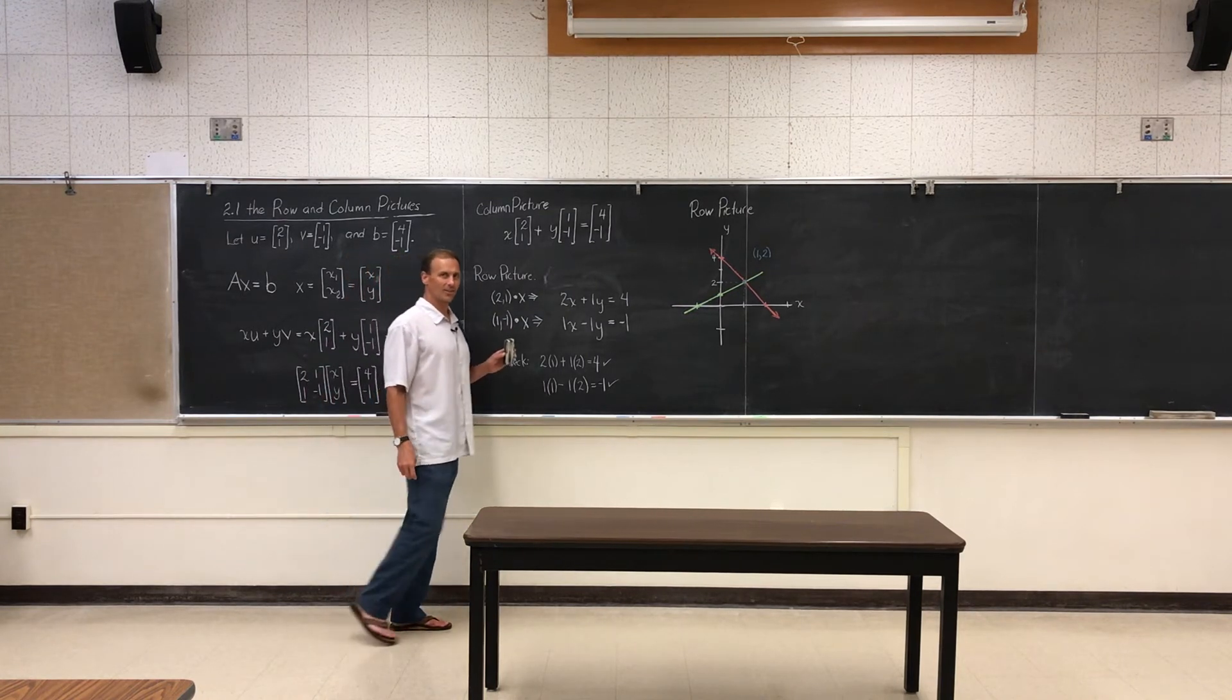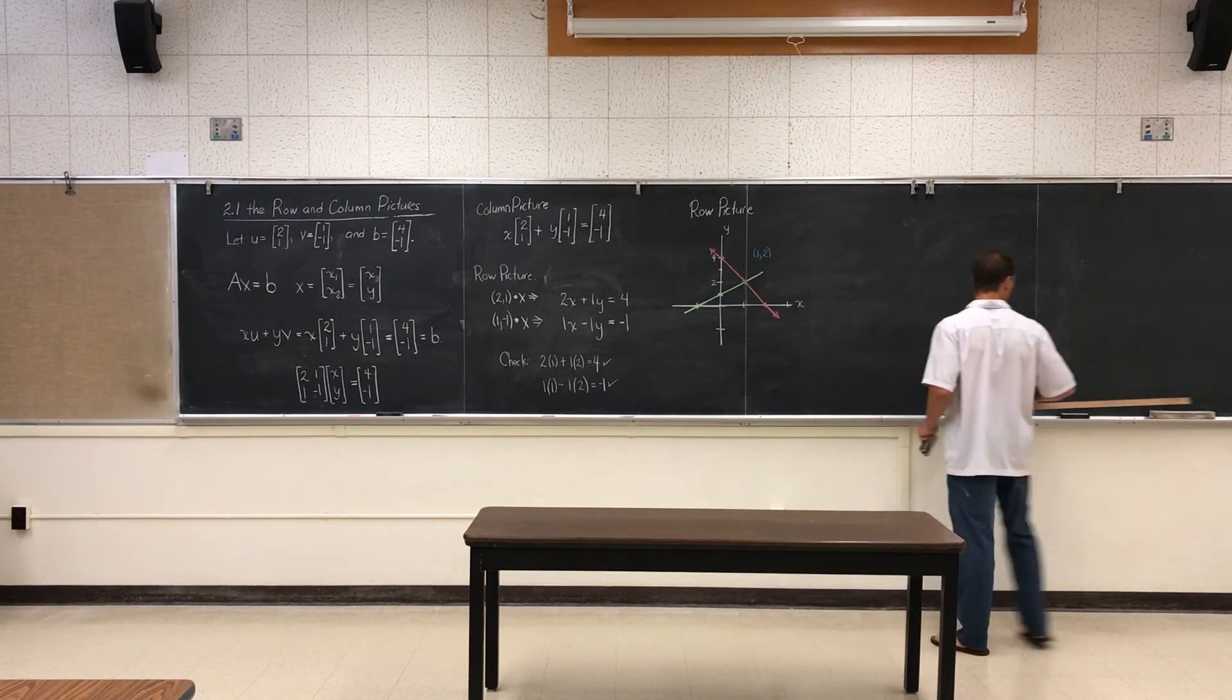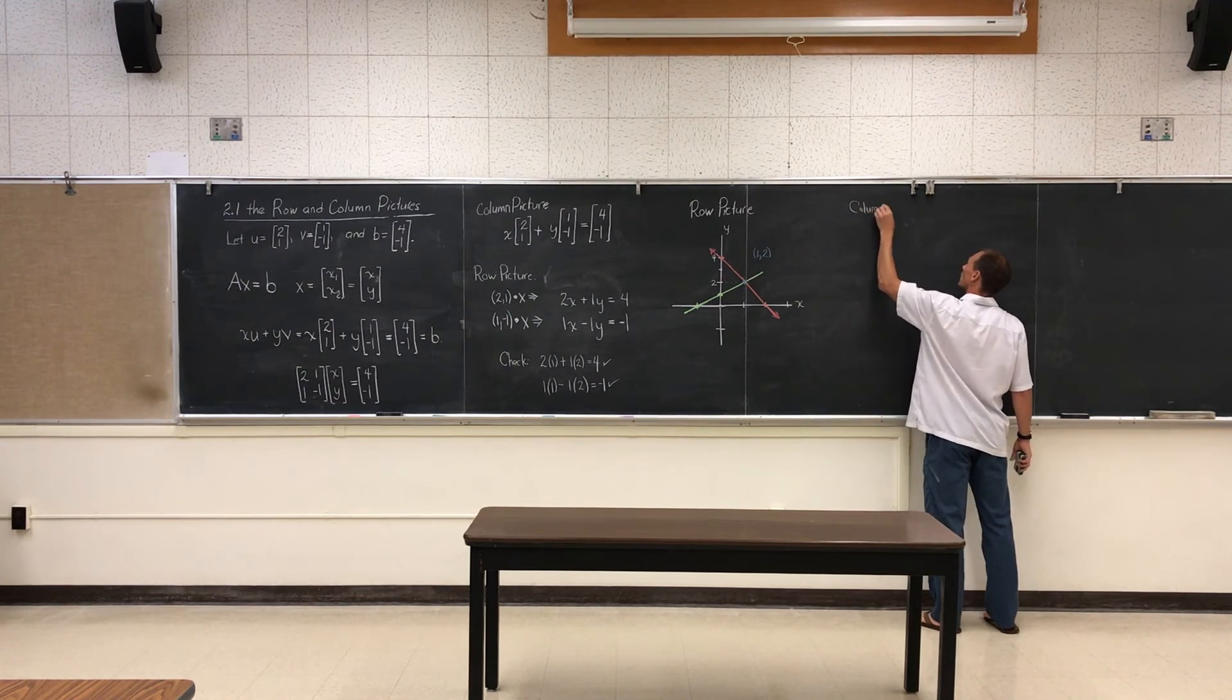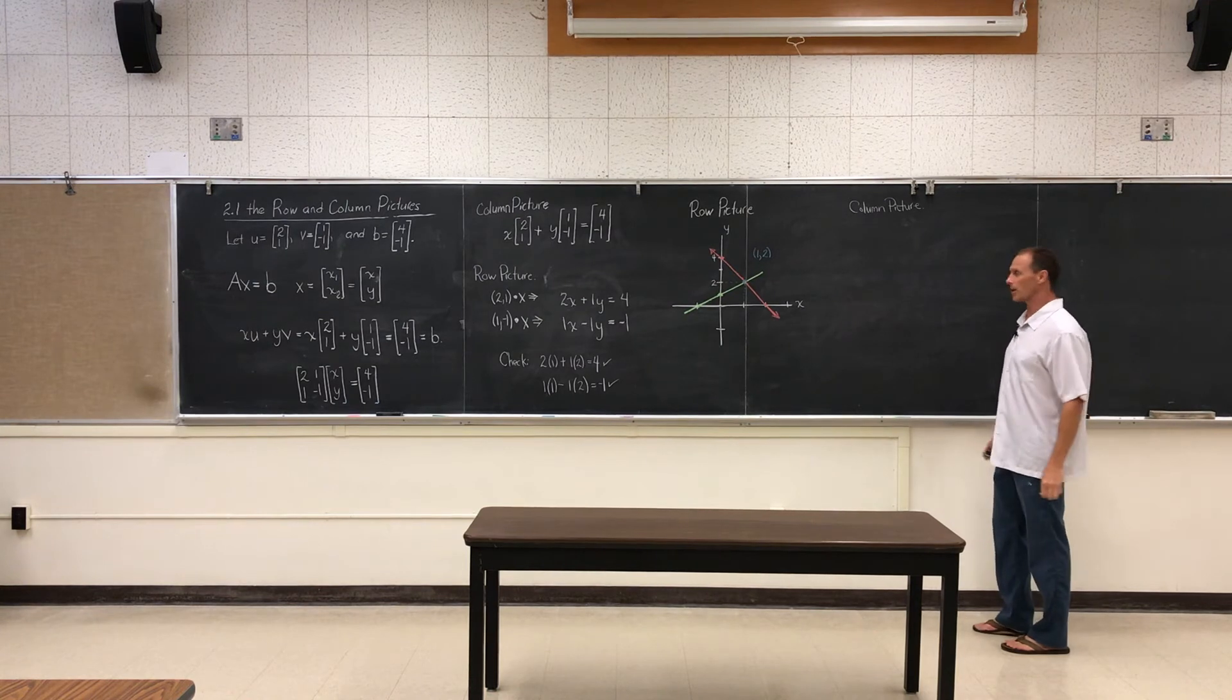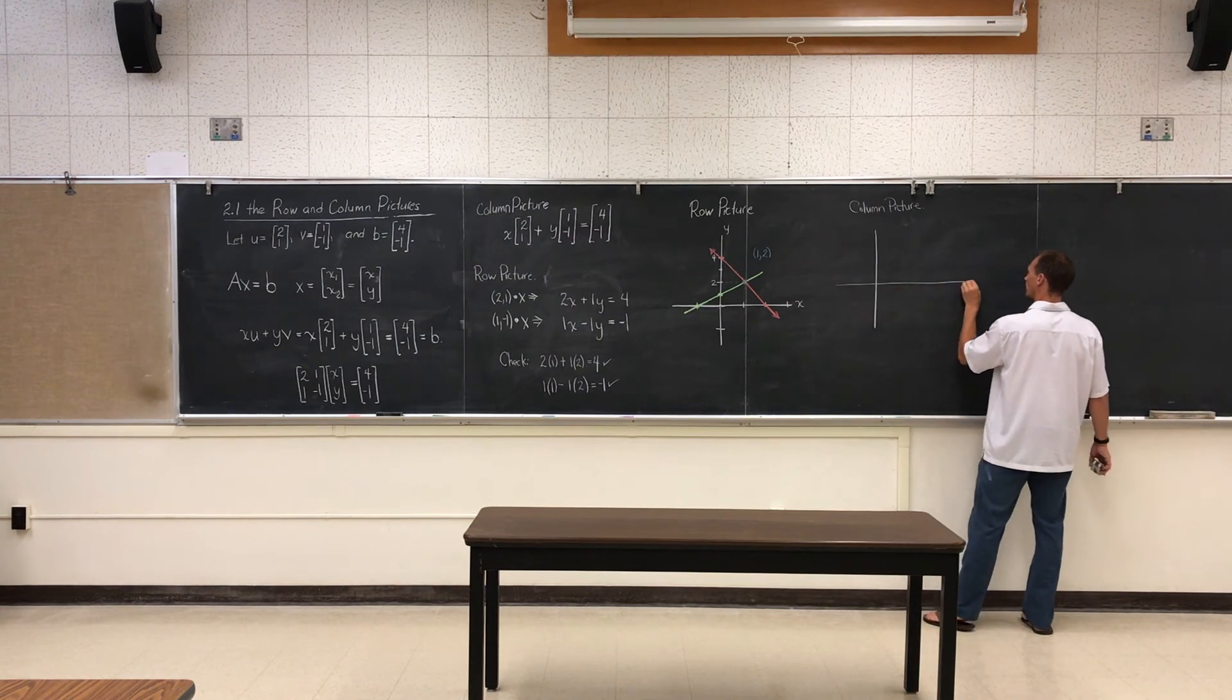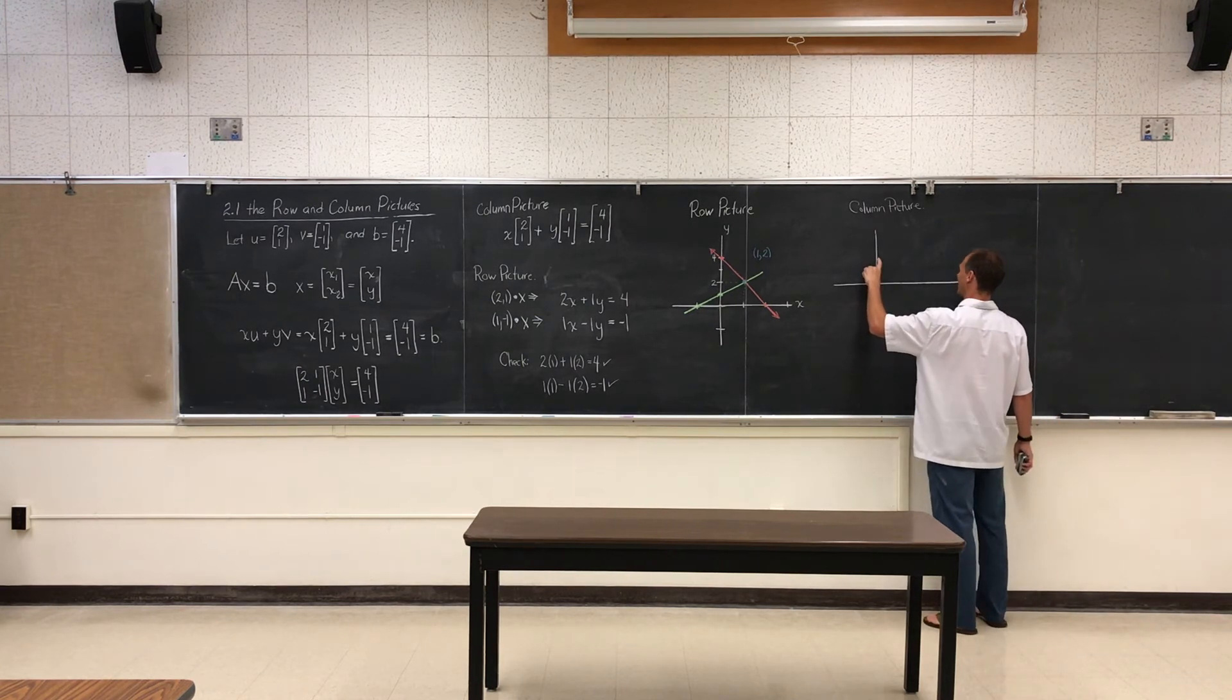But let's take a look now. Let's take a look at the column picture. Let's draw some column pictures. I'm going to start this again. Let's start again with a nice graph. So I'm going to lay this out. The vertical line here. There's my axis. Let's make a horizontal axis as well. So I'm going to mark these off.